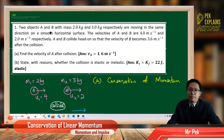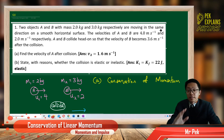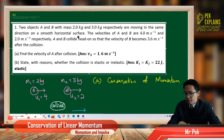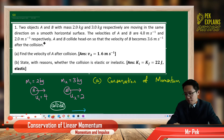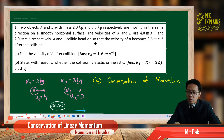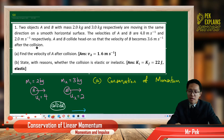Two objects A and B with mass 2 kg and 3 kg respectively are moving in the same direction on a smooth horizontal surface. The velocities of A and B are 4 m/s and 2 m/s respectively. A and B collide head on so that the velocity of B becomes 3.6 m/s after the collision. Find the velocity of A after collision.